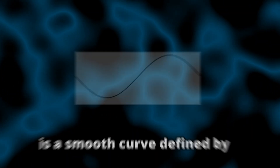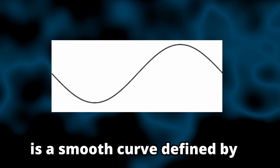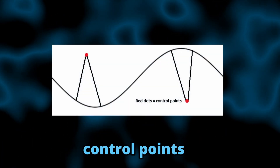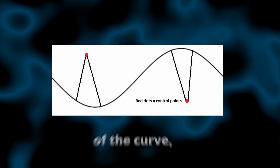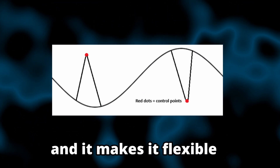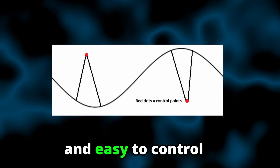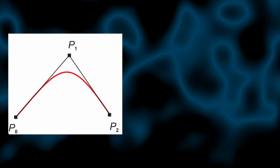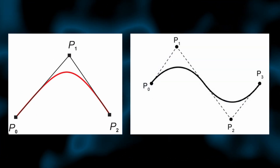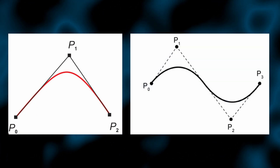A Bezier curve is a smooth curve defined by control points. The points guide the shape of the curve, making it flexible and easy to control. The most common types are the quadratic Bezier curve, which has three control points, and the cubic Bezier curve, which has four points.